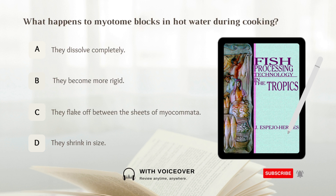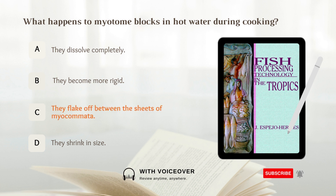What happens to myotone blocks in hot water during cooking? A. They dissolve completely. B. They become more rigid. C. They flake off between the sheets of myocomata. D. They shrink in size. Answer: C. They flake off between the sheets of myocomata.